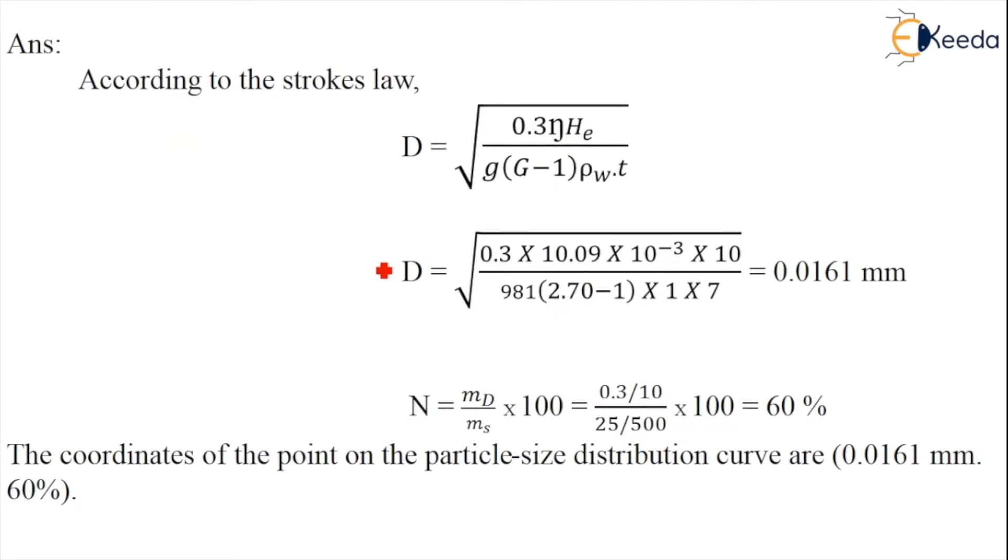When you are considering the pipette analysis, the Stokes law is D equals the square root of 0.3 η He divided by g times (G minus 1) times ρw times t. All the values are given and this is a very easy problem.